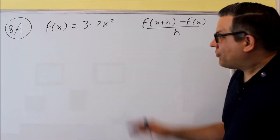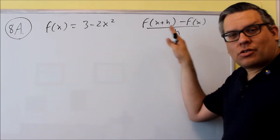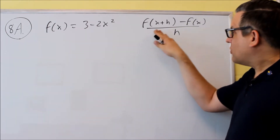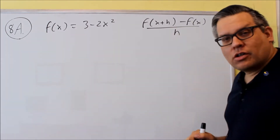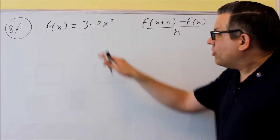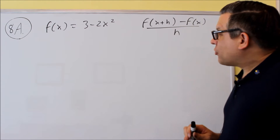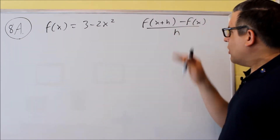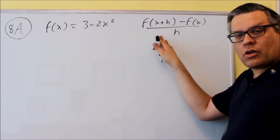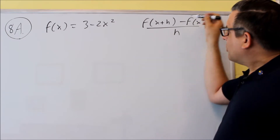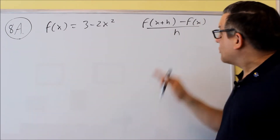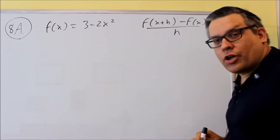Number 8: they want you to find the difference quotient. This formula will be provided for you on the test, so it's this one here, and they'll give you an f. So we want to work with 3 minus 2x squared. This formula has a couple different pieces to it. Now f of x they already give you, so we already know one of those pieces we can put in.